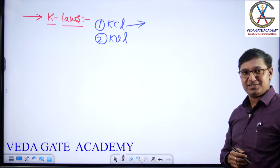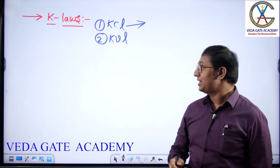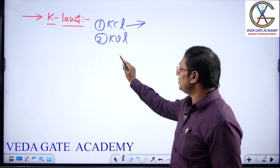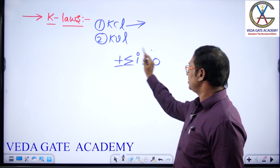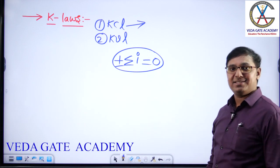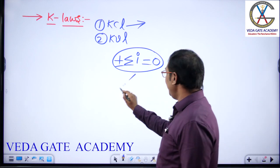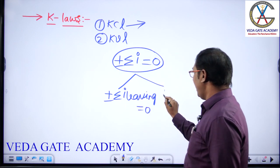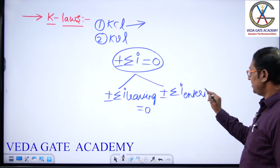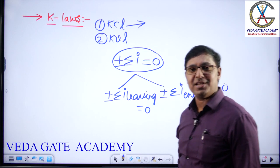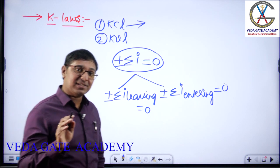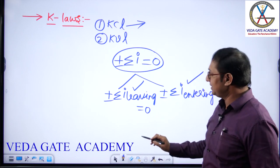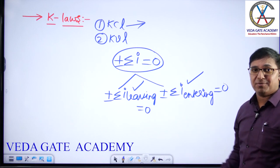Coming to the definition of KCL — very important. Definition of KCL: In a lumped circuit, for any of its nodes, the algebraic sum of currents at a node equals zero. This statement can be split as: algebraic sum of currents leaving the principal node equals zero, and algebraic sum of currents entering the principal node equals zero. These are the two statements that can be derived from the basic statement.